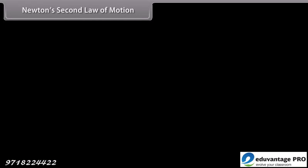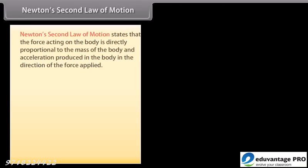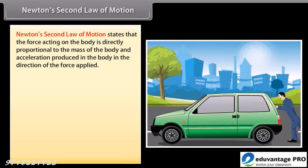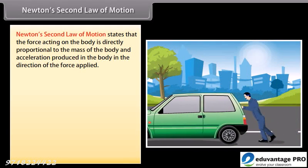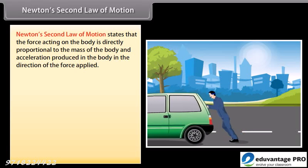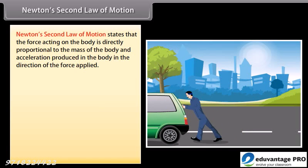Newton's second law of motion. Newton's second law of motion states that the force acting on the body is directly proportional to the mass of the body and acceleration produced in the body in the direction of the force applied. F is equal to M into A, where F is force, M is mass, A is acceleration.